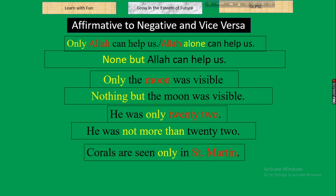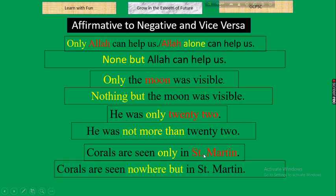Next example: 'Corals are seen only in Saint Martin.' Here 'only' is indicating a place. When 'only' indicates a place, instead of 'only' we take 'nowhere but.' Summary so far: only + person → 'none but'; only + thing → 'nothing but'; only + number → 'not more than'; only + place → 'nowhere but.'